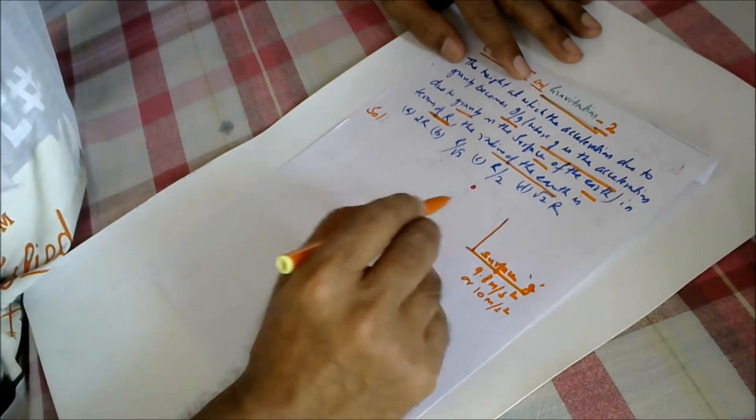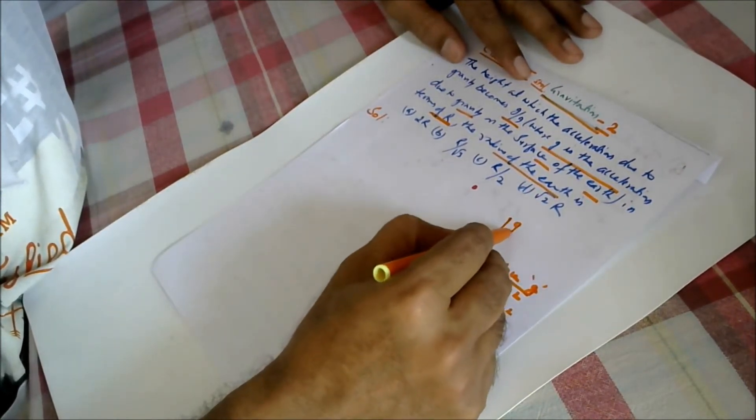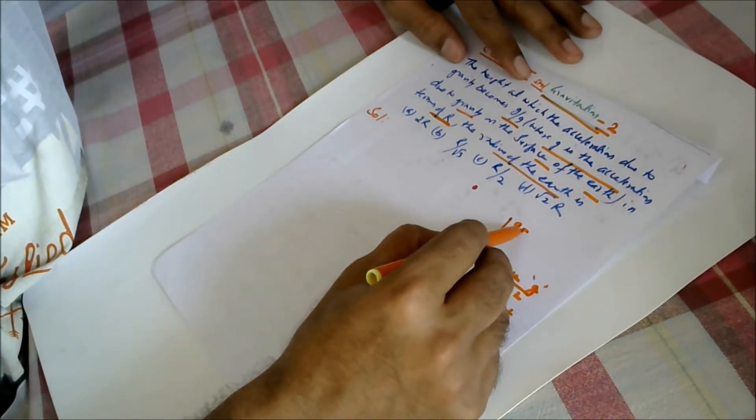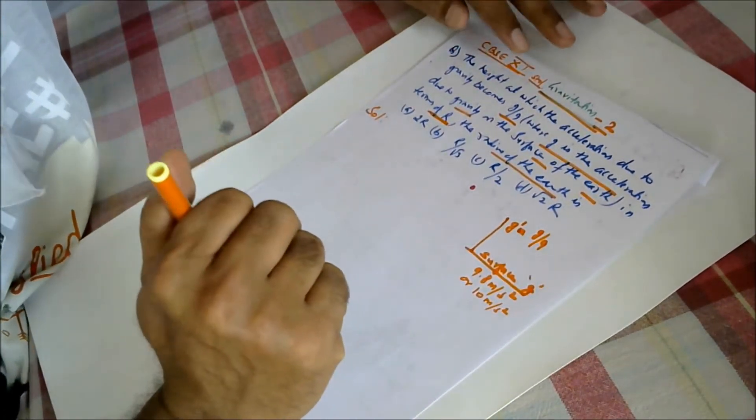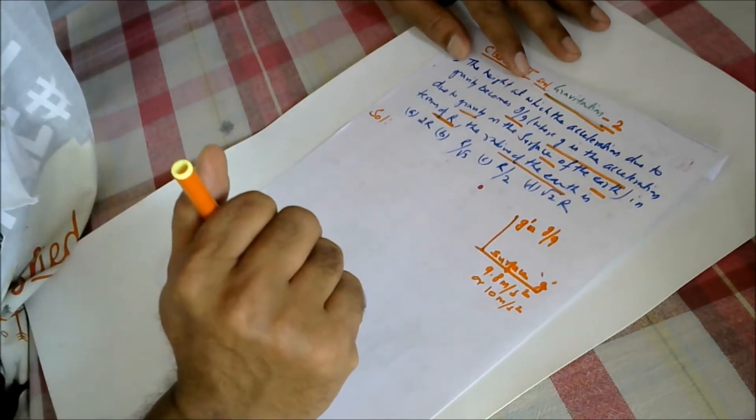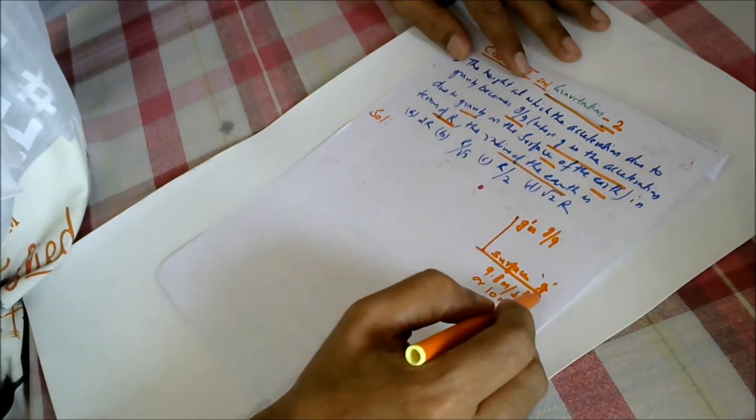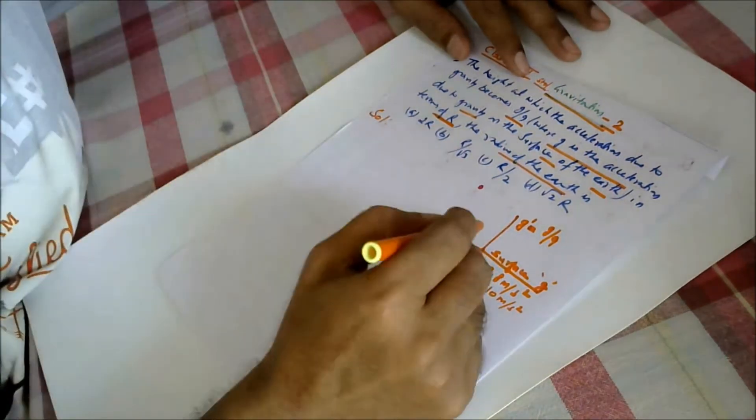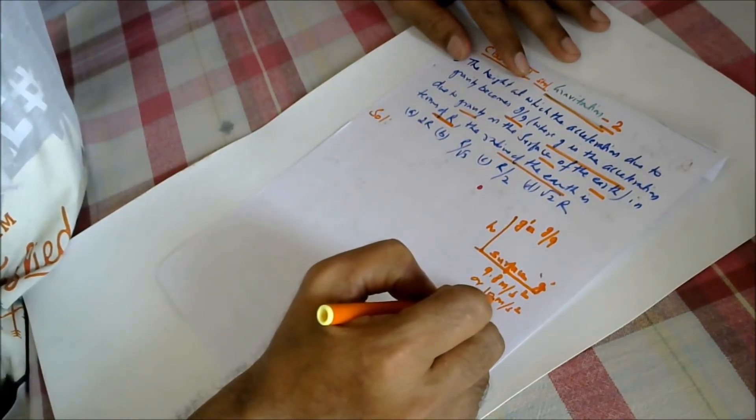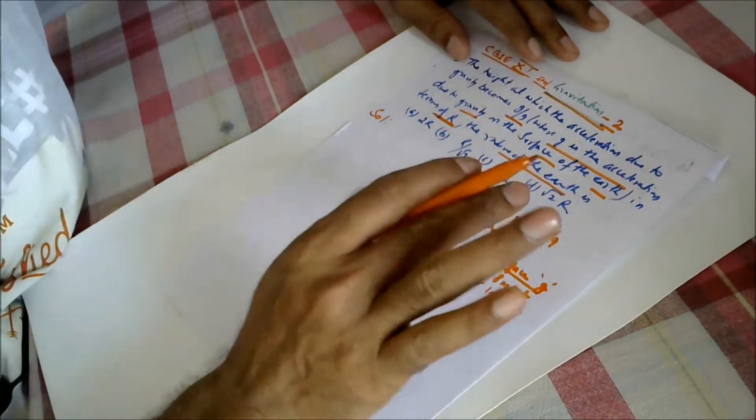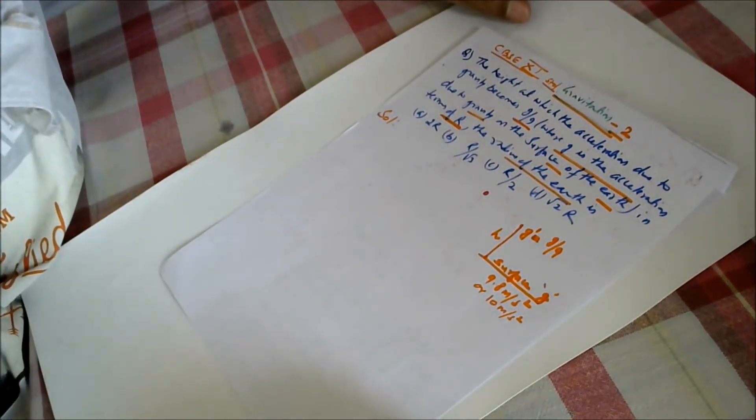Now we need to find the height from this surface where this g value will take the value of new g dash, so it will take the value of 1 by 9th part of this g. The more we are moving upward, this value of g will get reduced. So at what height h, this g value which was 10 meter per second square will become g by 9?